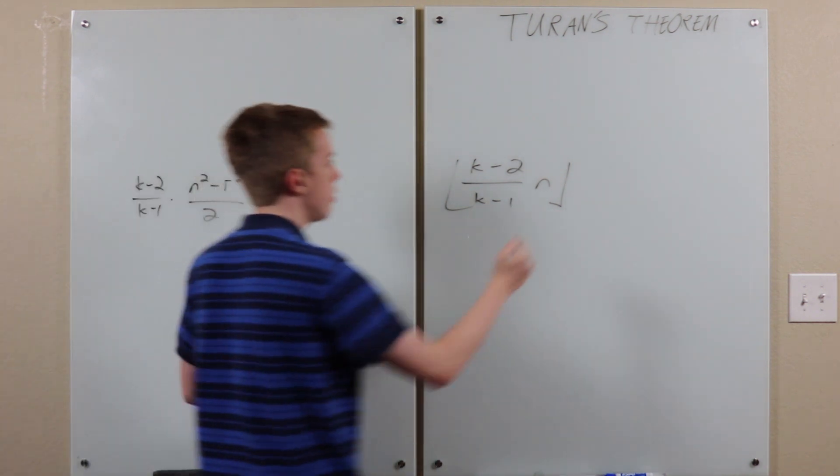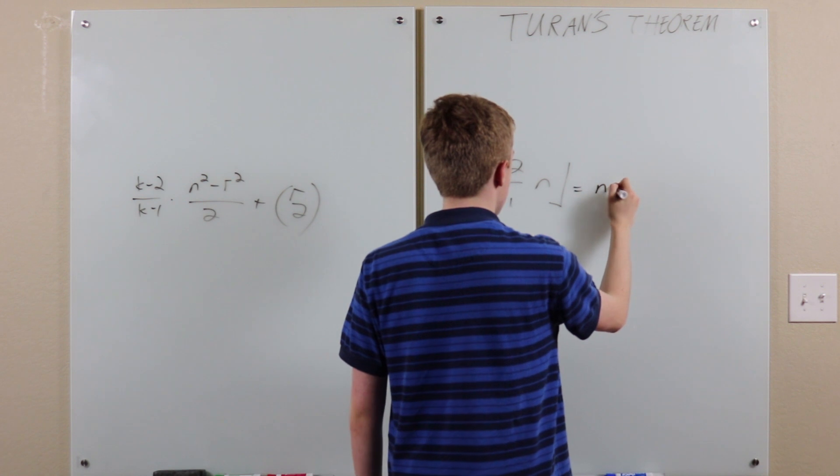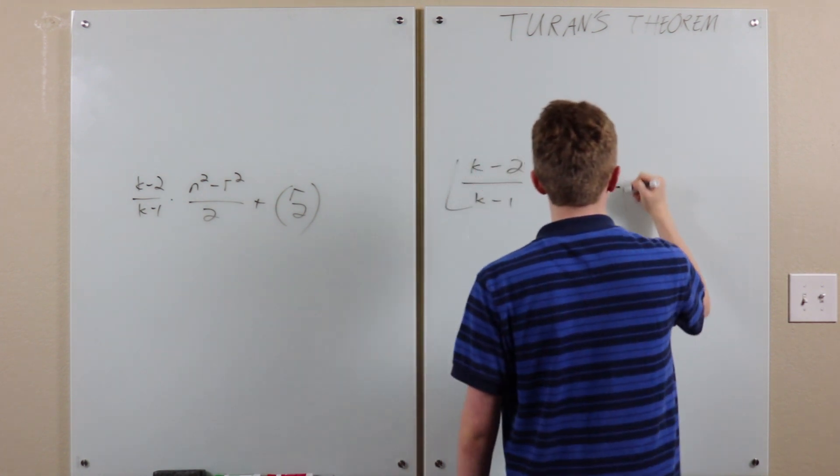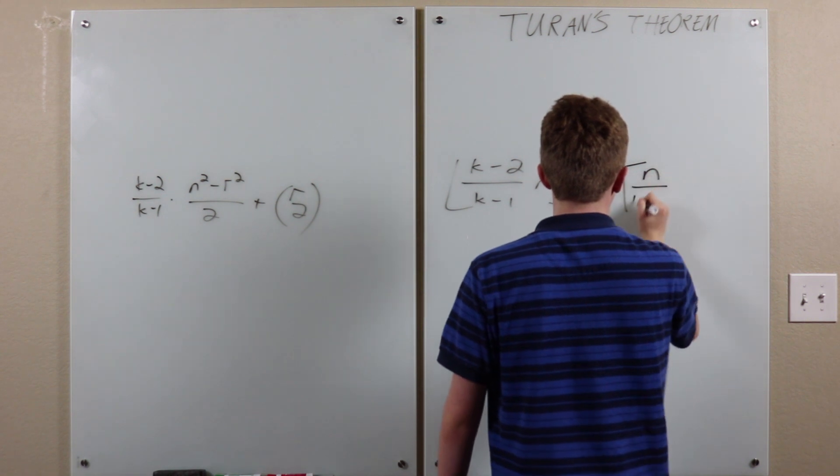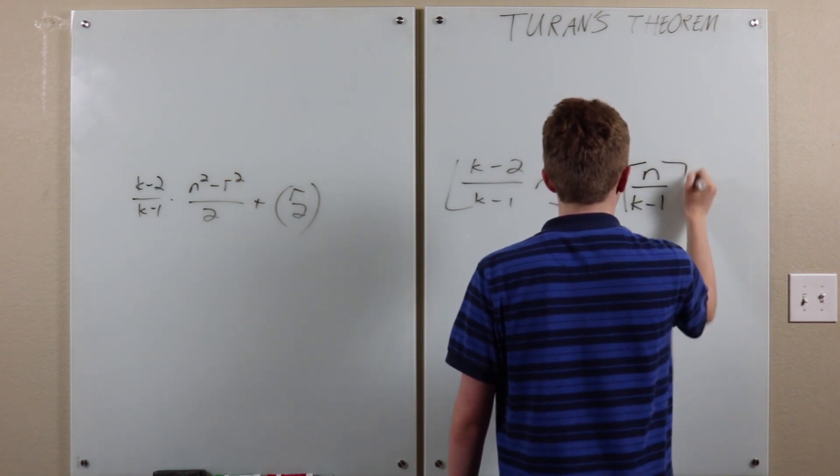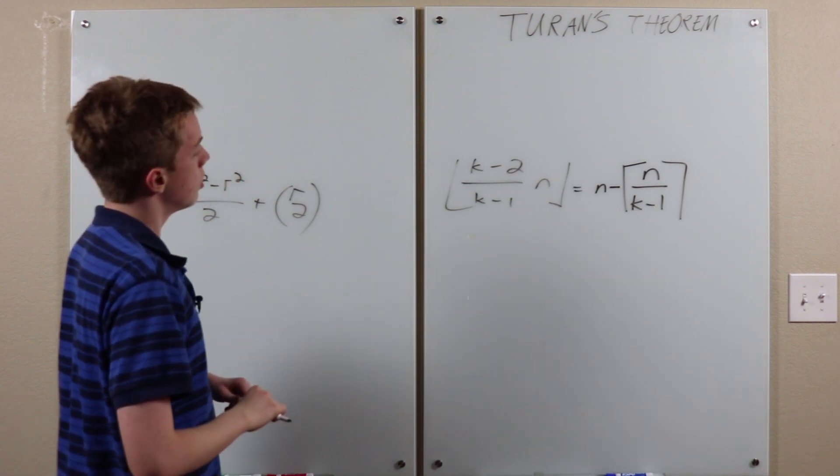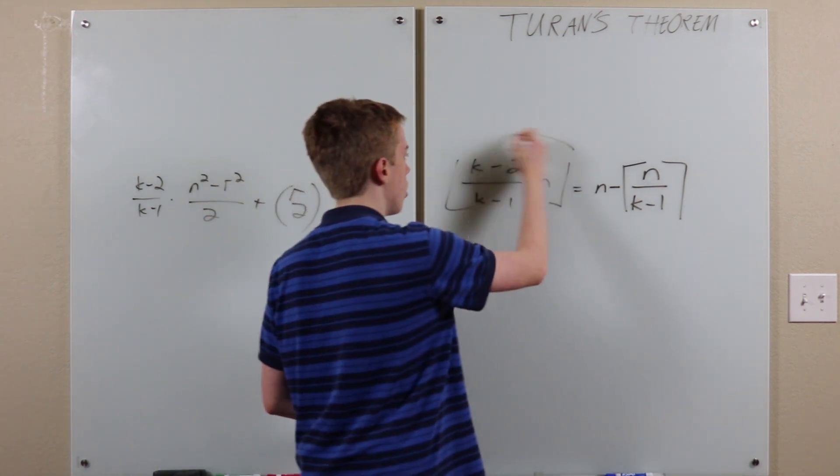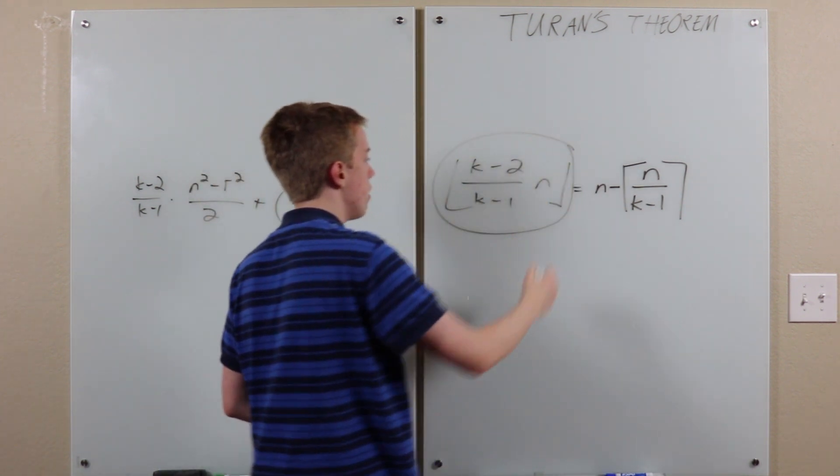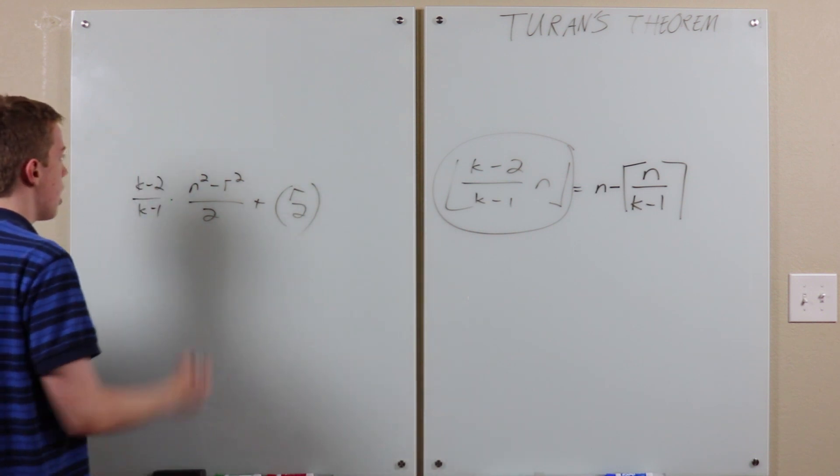So, we can write this as N minus ceiling of this. I think should be correct. Right. And then, so we take it out. Take out a vertex of at most this degree. And then use induction on the remaining graph. Now,